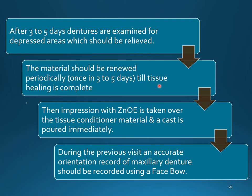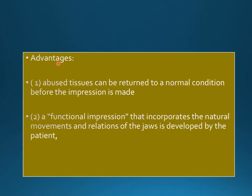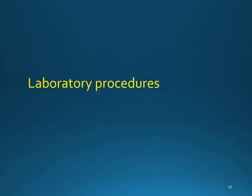The patient must return multiple times; the material can be scraped off by hand or removed with a bur if it has set hard. A zinc oxide eugenol impression is then taken over the tissue conditioner material and the cast is poured immediately. An accurate orientation record of the maxillary denture should also be established. Advantages: abused tissues can return to normal and a functional impression incorporating the natural movements and jaw relations of the patient is obtained.